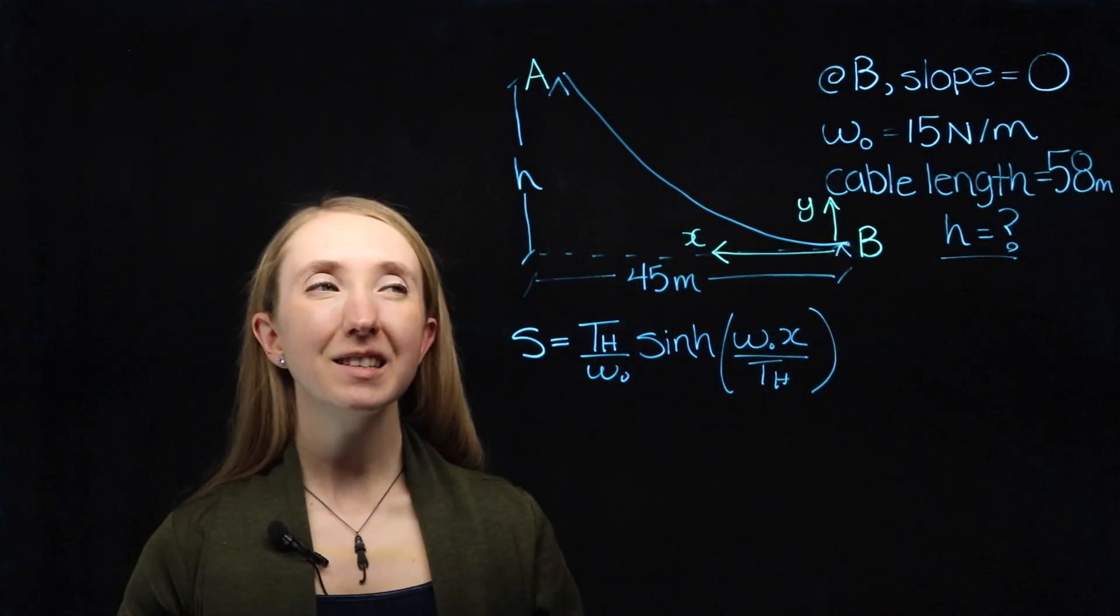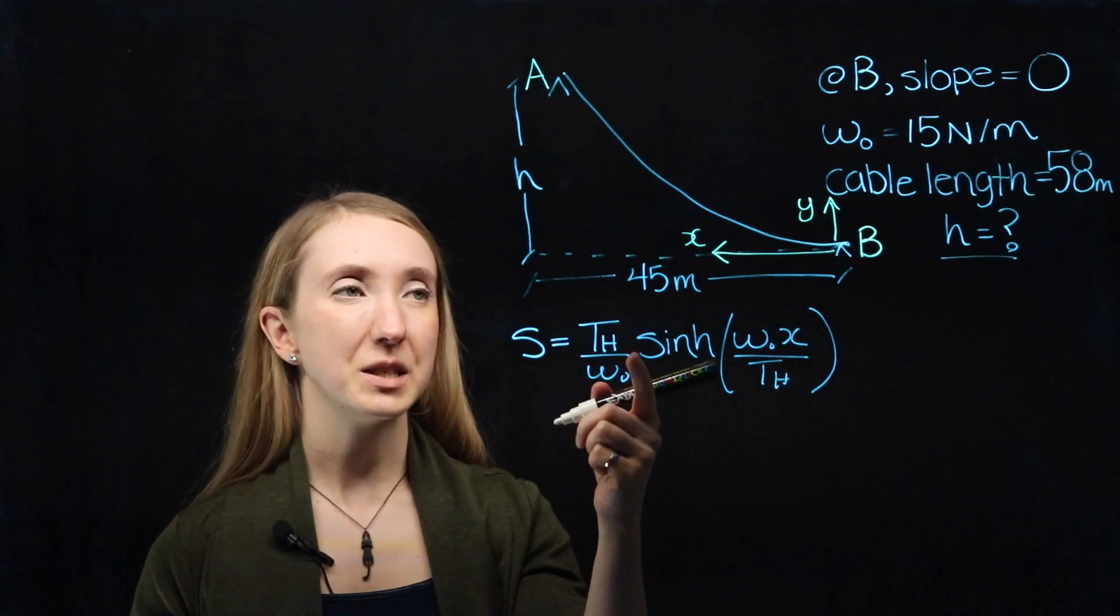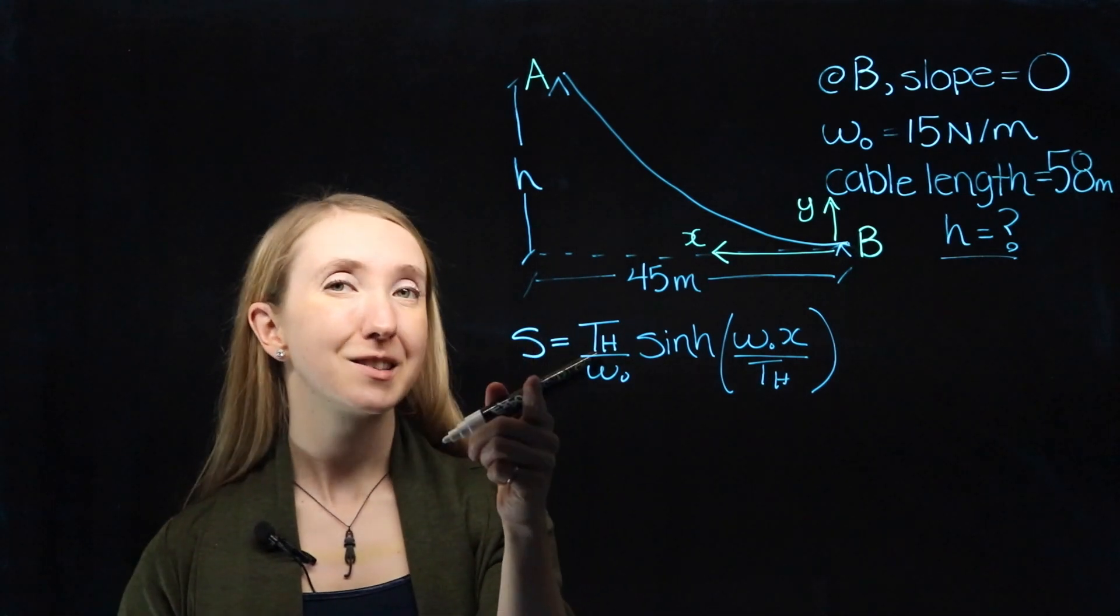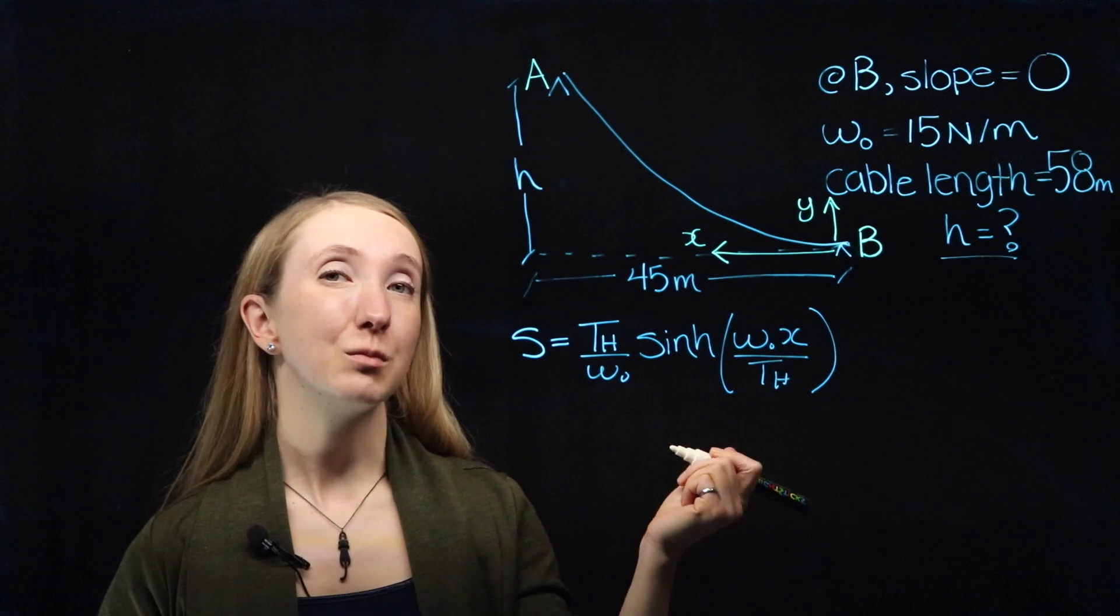When X is equal to 45 meters, we're at the end of our system, so we know the value for S, because we were told that the cable length is 58 meters.